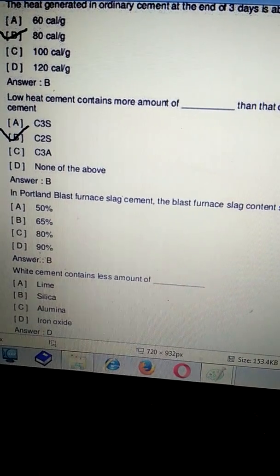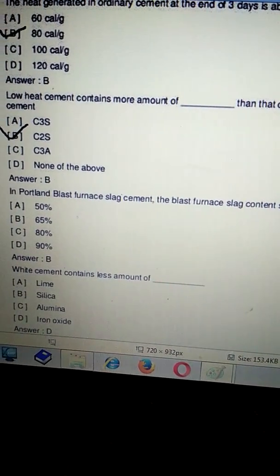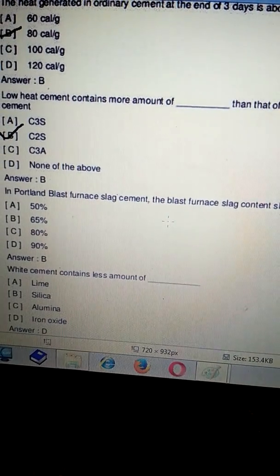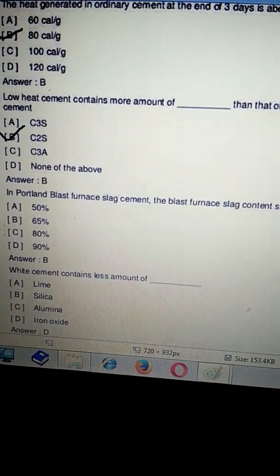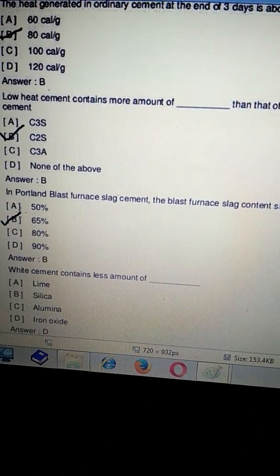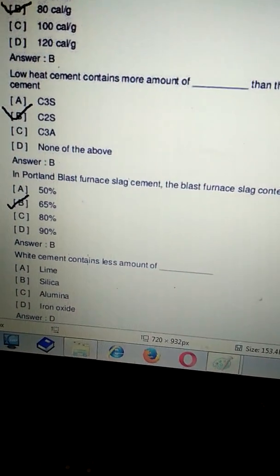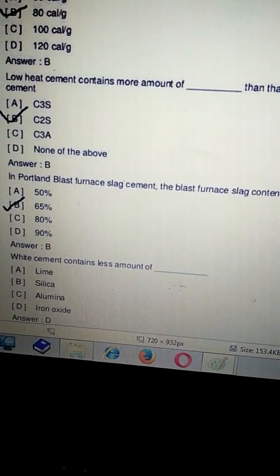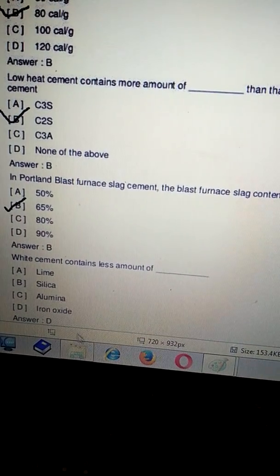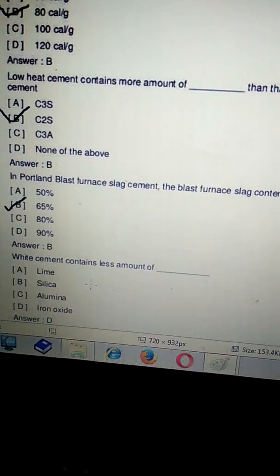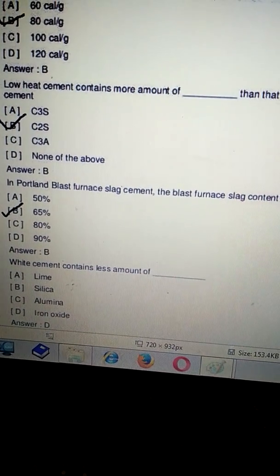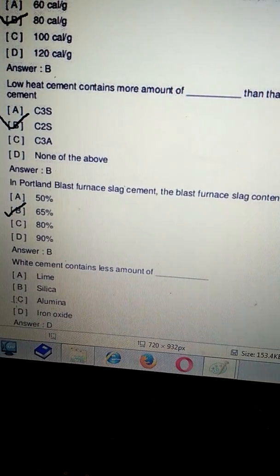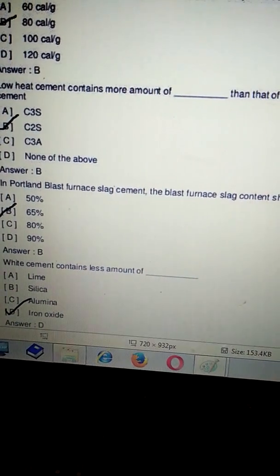Next question: white cement contains less amount of - less amount of iron oxide. Iron oxide content is less, that's why its color is white. The correct answer is D, the correct answer.